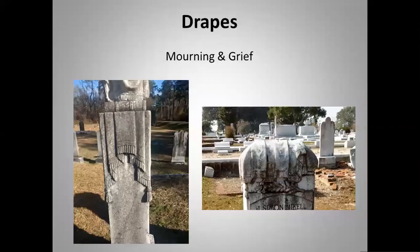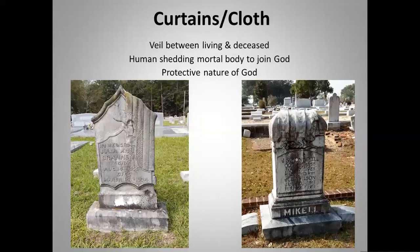Drapes are very intricately carved with little tapestries at the end and mean mourning and grief. Back in the 1800s and early 1900s, the body would often be placed in a parlor for viewing, with furniture and various things draped over them — these carvings are representative of that. Curtains or cloth are similar but without tassels, and usually mean a veil between the living and the deceased, humans shedding their mortal body to join God, or the protective nature of God.